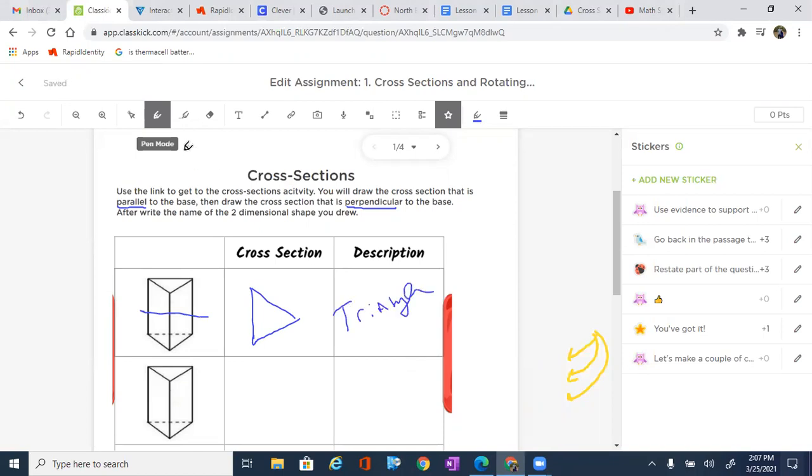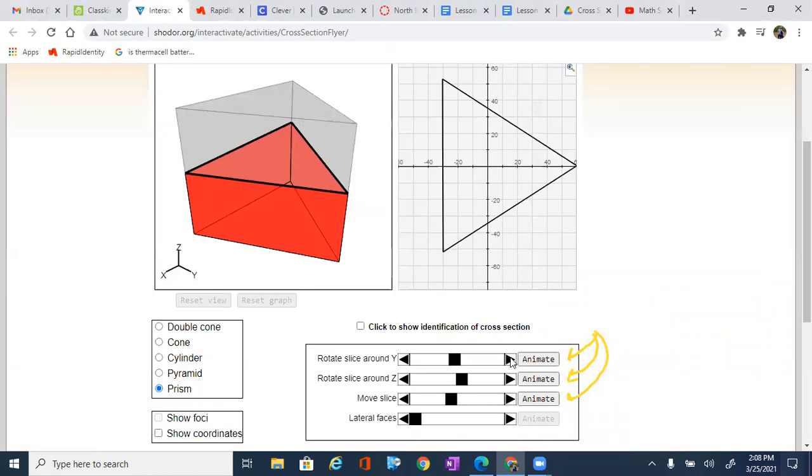Now, the next thing I'm going to do is go ahead and move it to perpendicular. And perpendicular means that it is straight up and down to the base, forming a 90-degree angle with the base. And I'm going to try my best to get there.